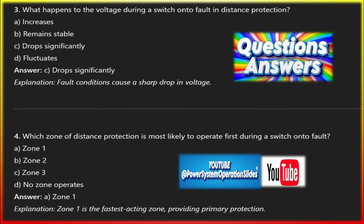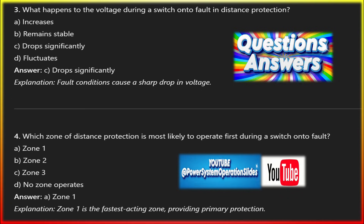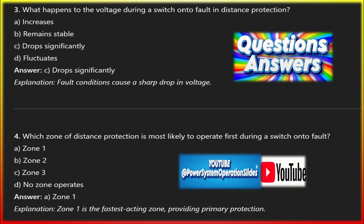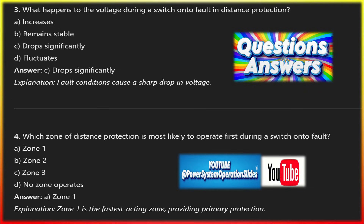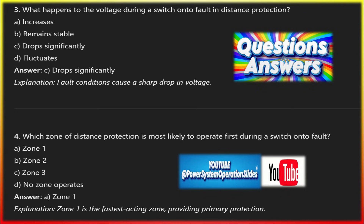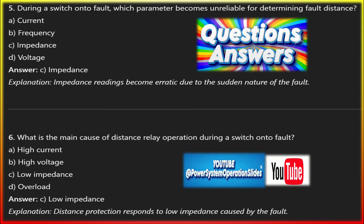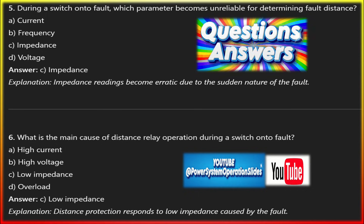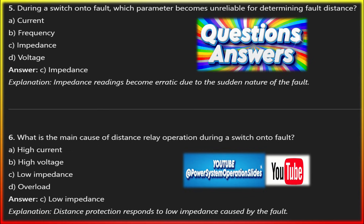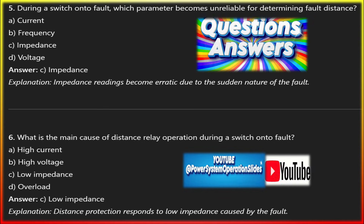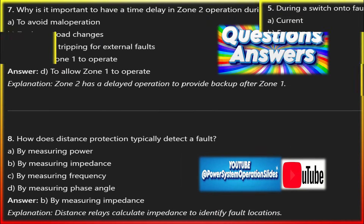For inrush current discrimination: when closing a breaker onto a healthy line, there may still be an initial surge of current due to transformer magnetizing inrush or charging of long transmission lines. Advanced relays have built-in algorithms to distinguish between inrush currents, which decay quickly, and actual fault currents, which persist. This ensures that the SOTF function does not misoperate during normal breaker operations. Regarding system voltage fluctuations: voltage swings might temporarily drop the line voltage before breaker closing, and the relay may misinterpret this as a pre-existing fault condition. Voltage thresholds must therefore be carefully tuned.